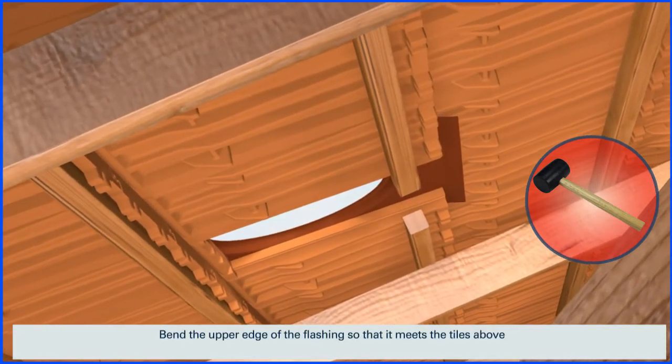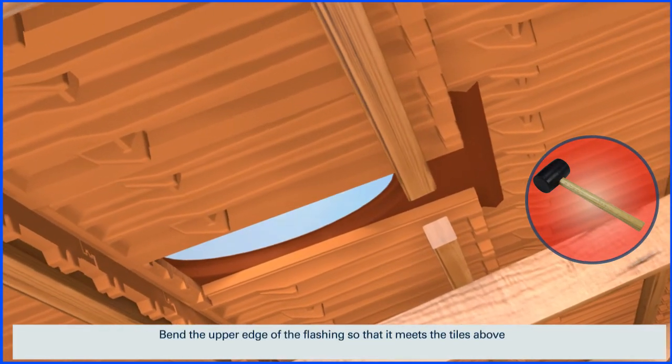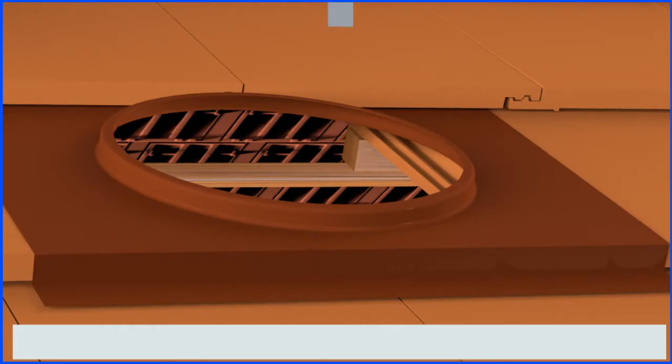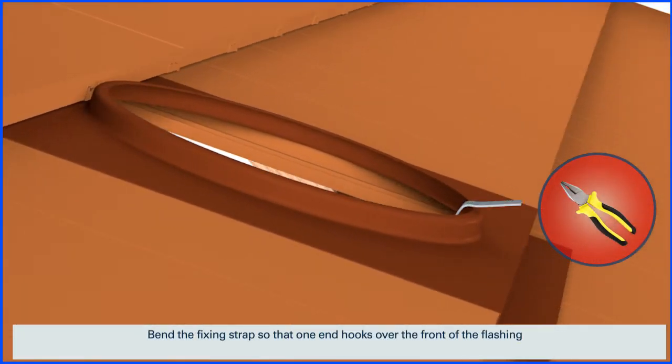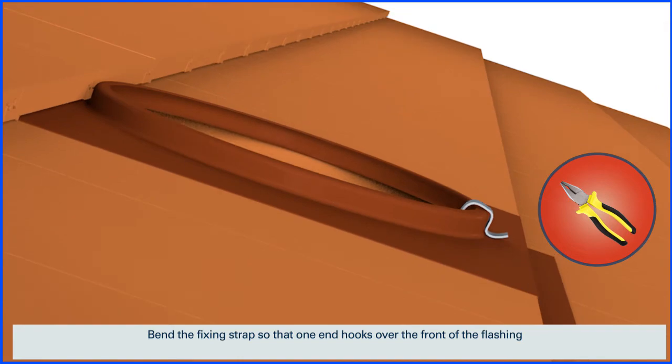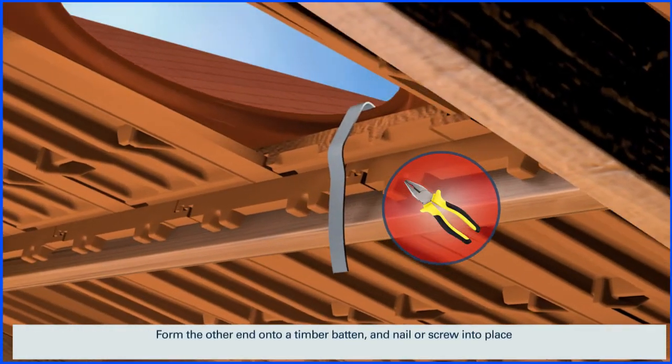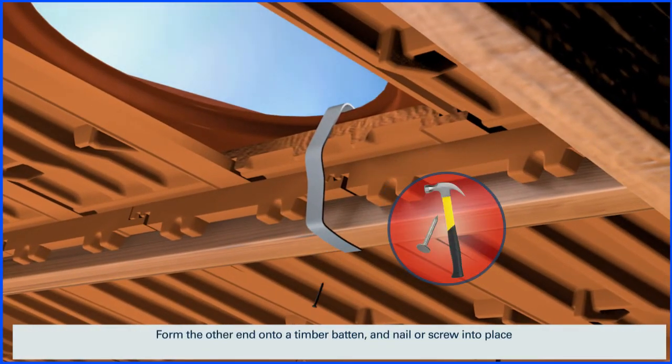Bend the upper edge of the flashing so that it meets the tiles above. Bend the fixing straps so that one end hooks over the front of the flashing. Form the other end onto a timber batten and nail or screw into place.